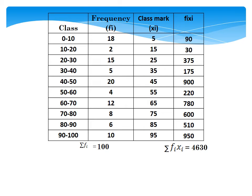The next step is to find the sum of all the frequencies, that is the total number of observations. Adding all the f values gives us 100. This total is denoted by sigma fi, so sigma fi = 100. Similarly, adding all the fx values in the fourth column gives us a total of 4630, denoted by sigma fi xi. So sigma fi xi = 4630. These values will now be substituted into the formula.